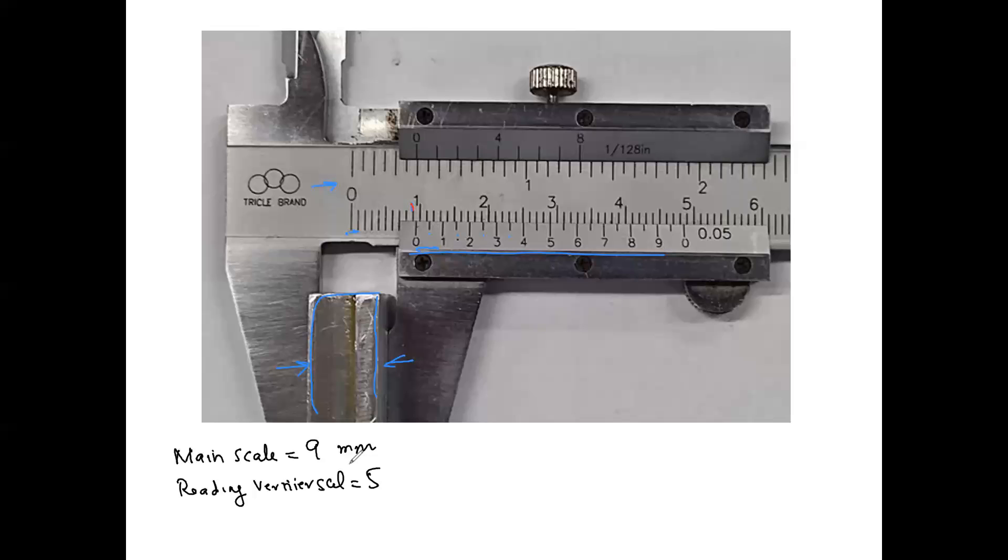Now, what you do is for the vernier scale, you take the reading, which is 5, and you multiply it by the distance corresponding to one unit, which in this case is 0.1 millimeter. And it would give you 0.5 millimeter. And now you add the main scale with your vernier scale. So your reading of the vernier caliper would be 9 plus 0.5 equals 9.5 millimeters.